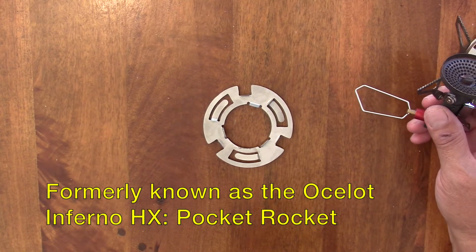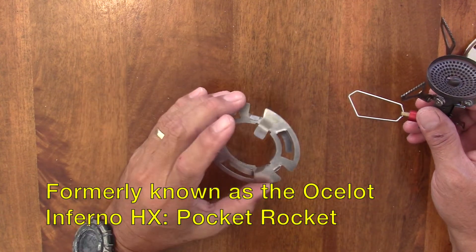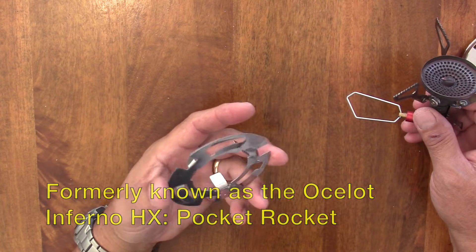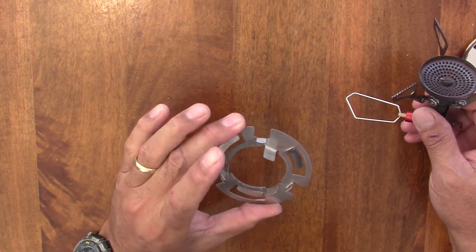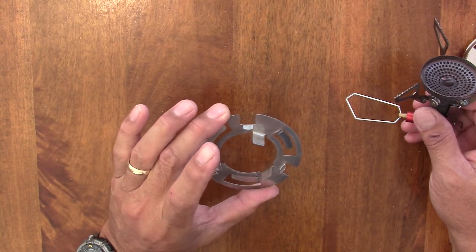Hi, this is John from Flat Cat Gear, and what you're looking at used to be called the Ocelot HX kit for the Pocket Rocket Deluxe Stove.